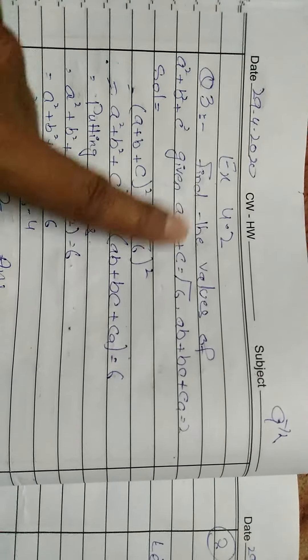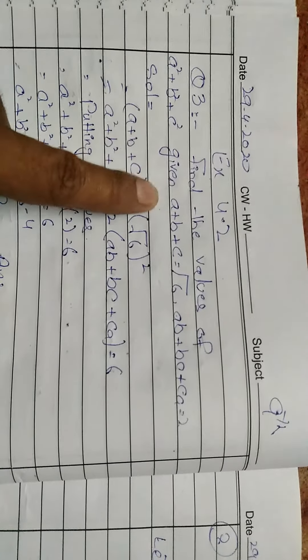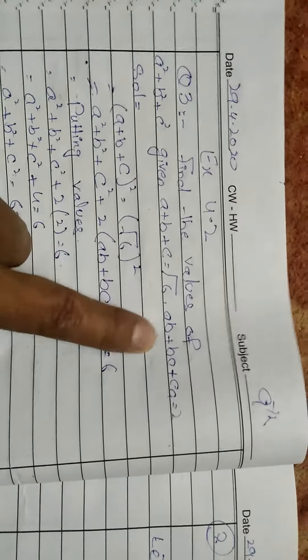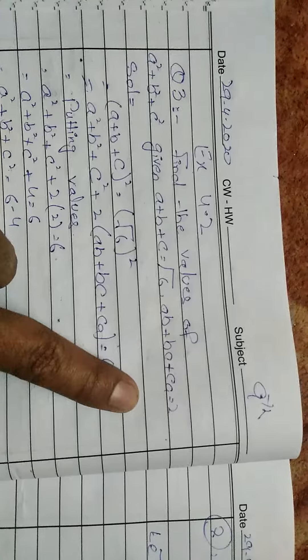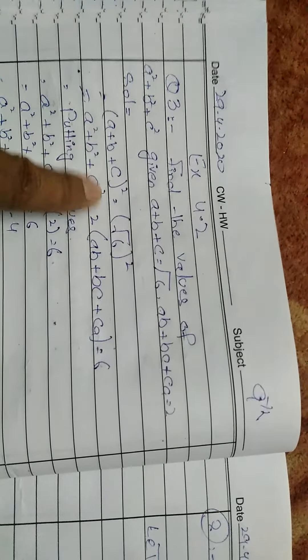Good morning students. In exercise 4.2, given a² + b² + c² = 6 and ab + bc + ca = 2, find the value of (a + b + c)².